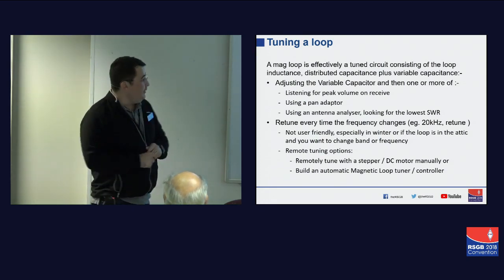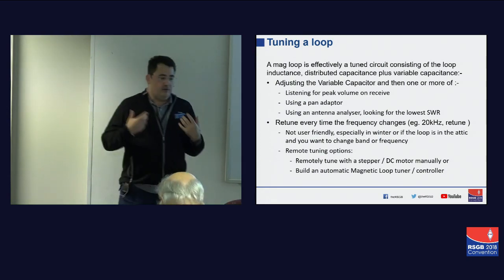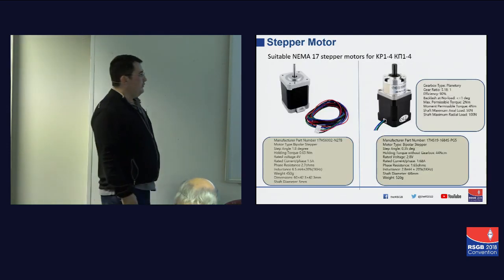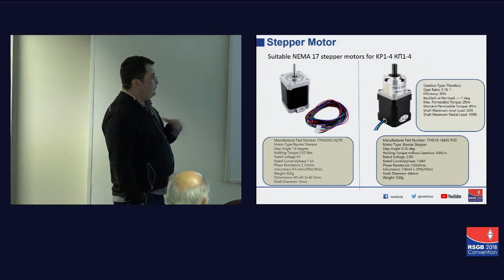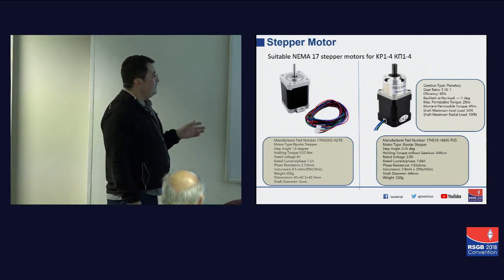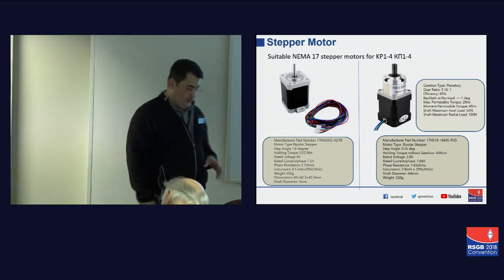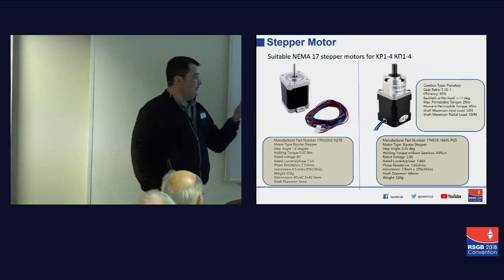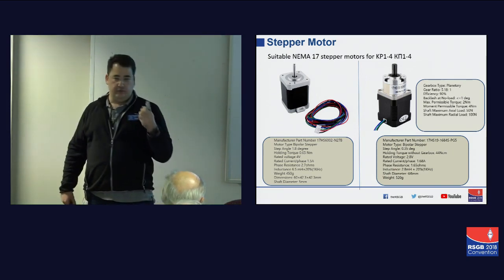I've mentioned how remotely tuning a loop is the only practical way to use these loops. So we're going to look at how to drive this capacitor. Out of a dozen or so loops I've built, these two stepper motors far and away will turn just about anything out there. The one on the left-hand side without a planetary gearbox has 0.65 newtons of holding torque, which is enough to turn any of those Soviet-era capacitors at speed — I can go from 40 meters to 160 meters as fast as I've finished changing band on the radio.